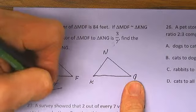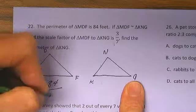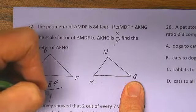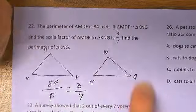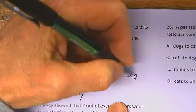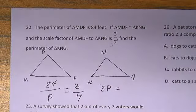84 is to P, the perimeter of the new one, as 3 is to 7. That gives us 3P equal to 7 times 84.